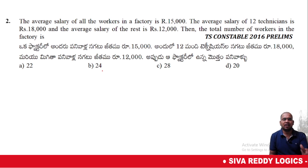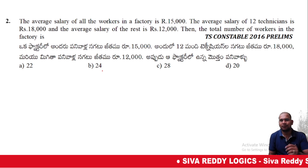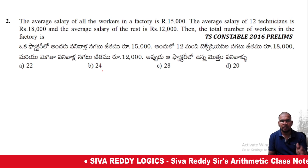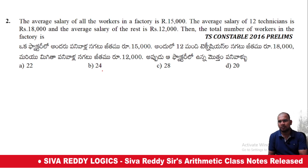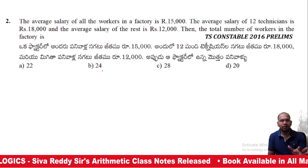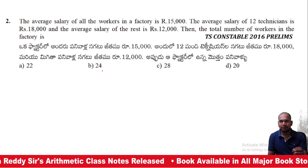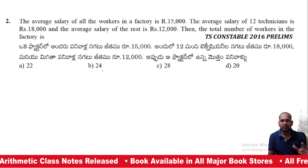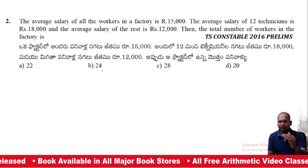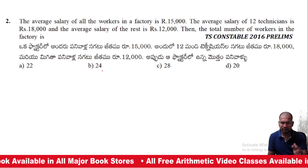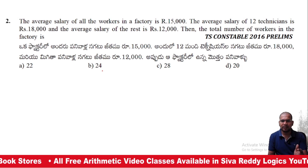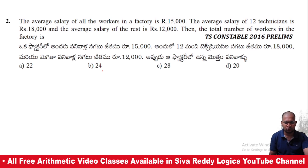The average salary of all workers in the factory is 15,000. The average salary of 12 technicians is 18,000. And the total number of workers in the factory is what?